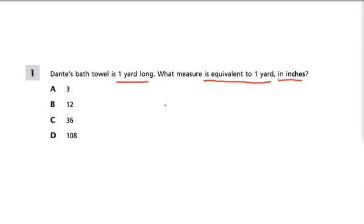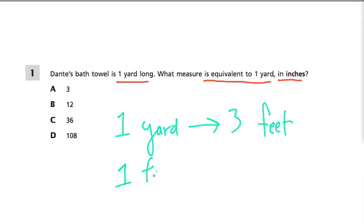Well, this is a two-step conversion because we have one yard, right? And every yard is made from three feet. Now, the next conversion is inches, because every one foot has 12 inches.